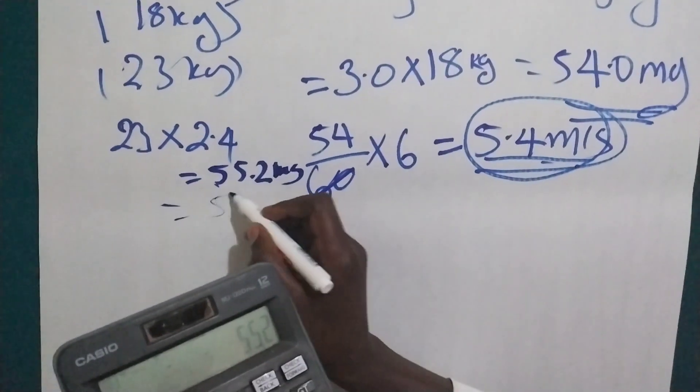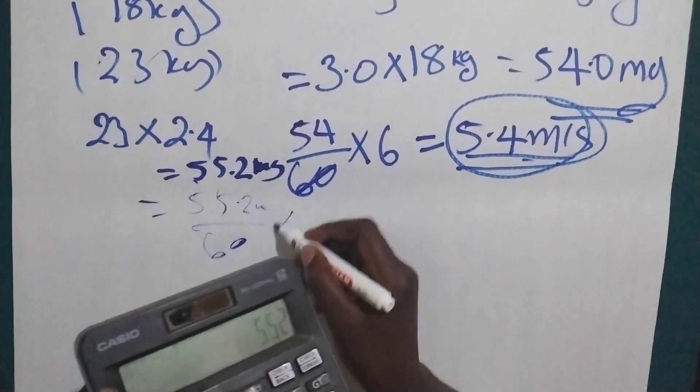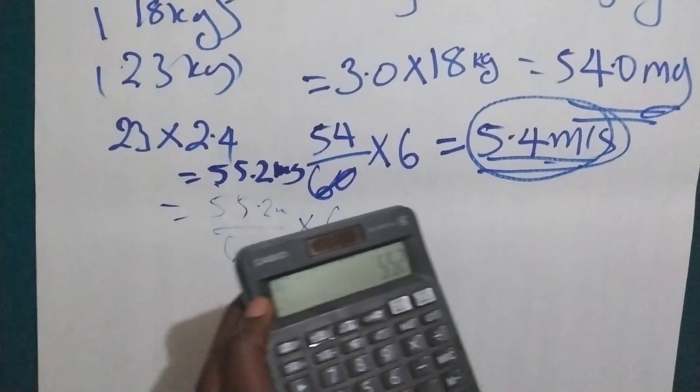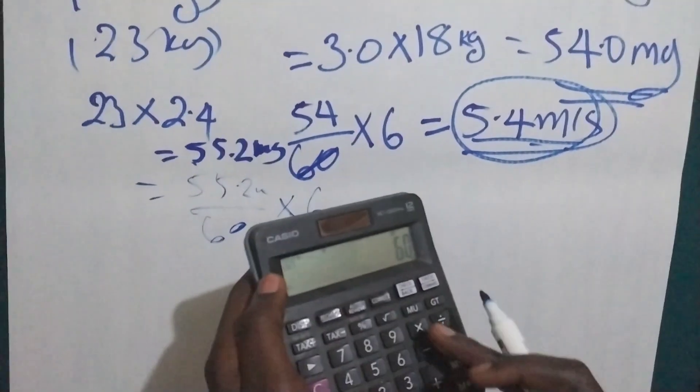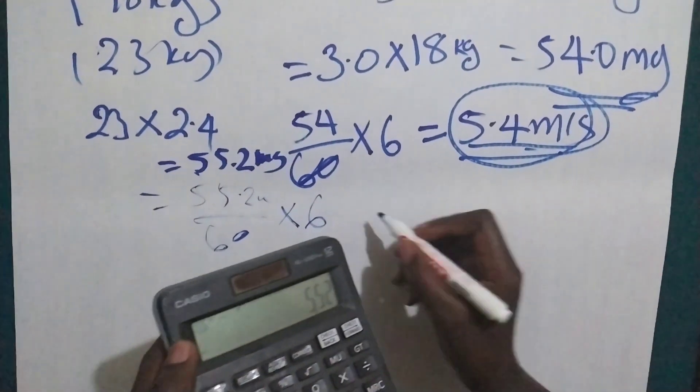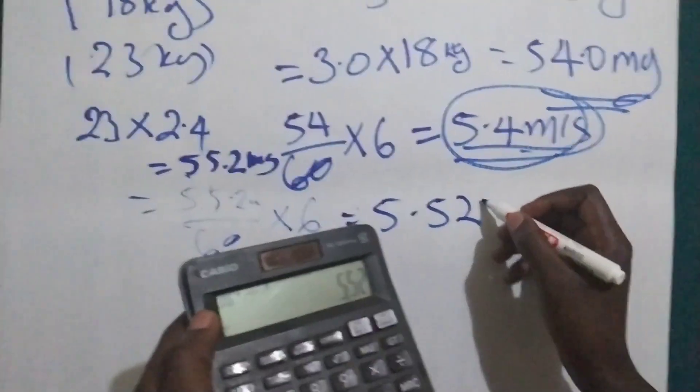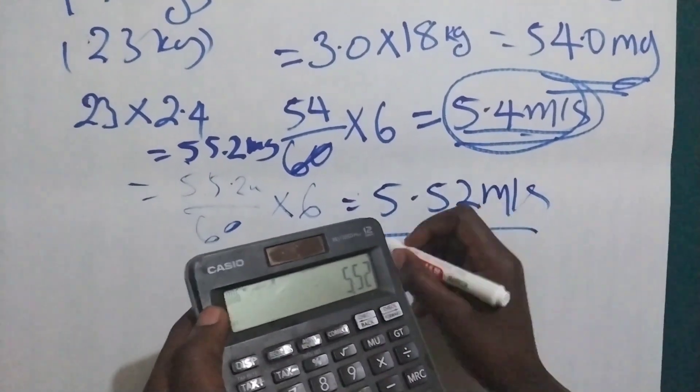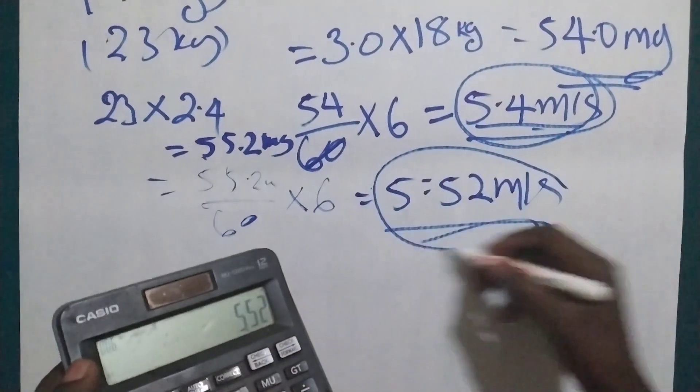So to convert this one, we are going to put 55.2 milligrams divided by 60 times 6. So let's divide this one by 60 and multiply by 6. What will we get? We will get 5.52 milliliters. But we can round this one and we get 5.5 milliliters and we give to the patient.